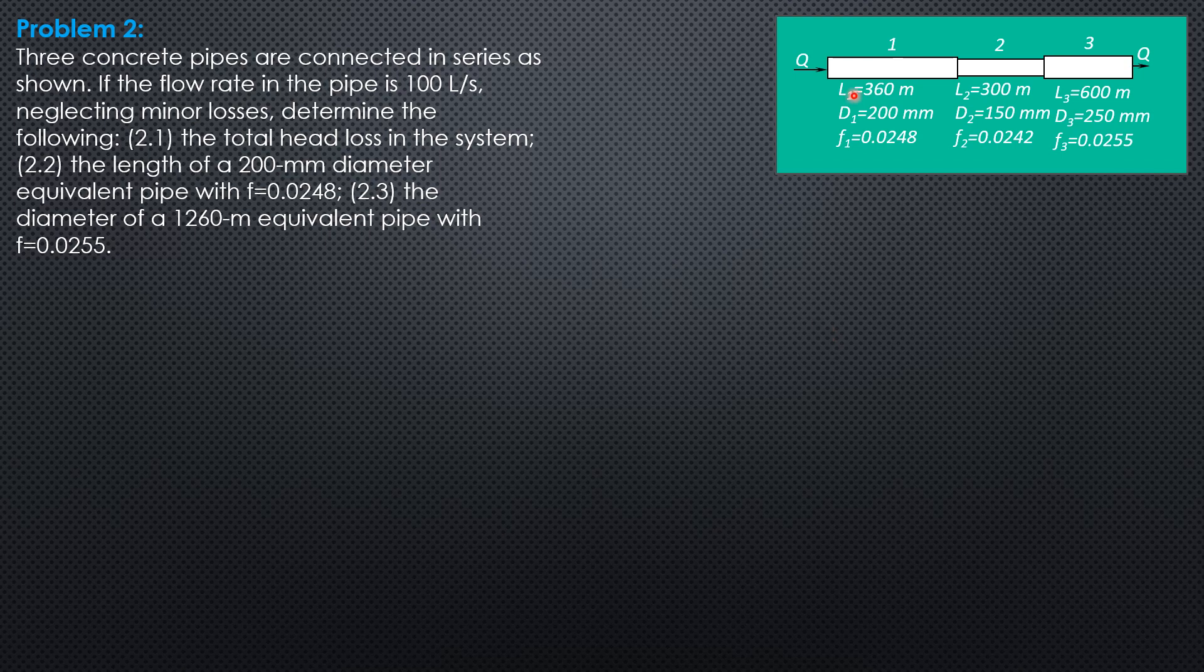So the total head loss is again the sum of the individual losses. And the formula by Darcy Weisbach is, head loss is 0.08, summation of 0.0826 friction factor length discharge square over diameter to the fifth. So in this case,